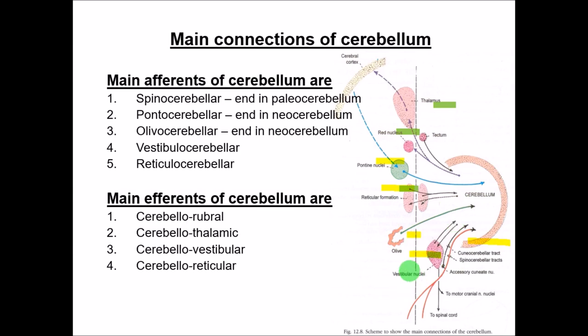The fourth afferent tract is the vestibulocerebellar tract, beginning from the vestibular nuclei and ending in the cerebellum. The fifth is the reticulocerebellar tract, from the reticular formation to the cerebellum. These are the important afferent tracts. The efferent tracts starting from the cerebellum include: the cerebellorubral tract (cerebellum to red nucleus), and the cerebellothalamic tract (cerebellum to thalamus, and then to cerebral cortex).